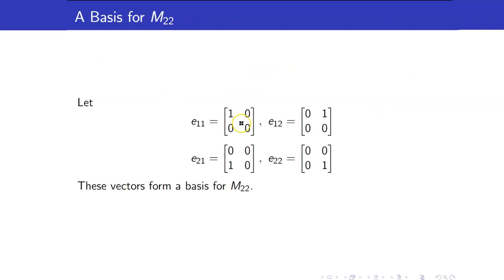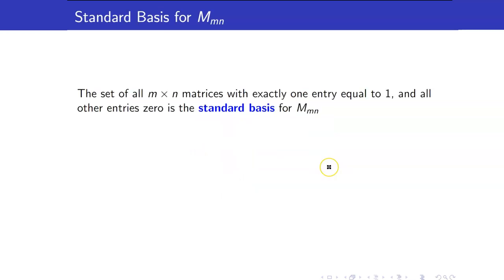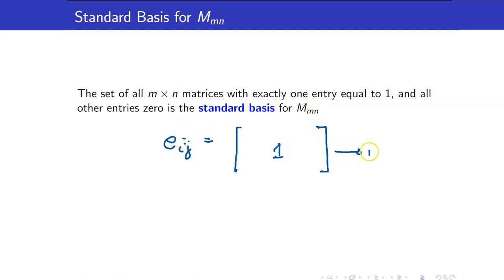Another example of a basis: these elements form a basis for M22. You can check for linear independence and for spanning set. We have already shown in previous slides that this really spans M22 because an arbitrary element in M22 can be written as a linear combination of these four matrices. We can generalize this for the vector space Mmn. The elements of the standard basis are Eij, where we have 1 in the ith row and jth column and 0 everywhere else.